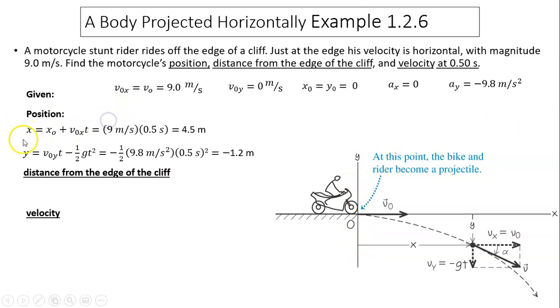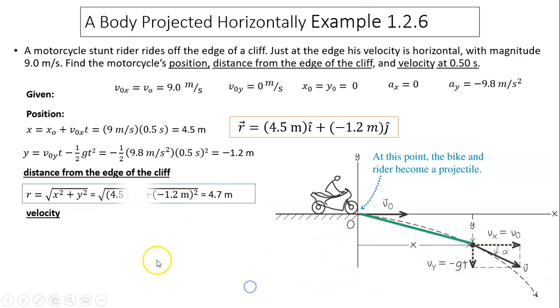To find position, we use position equation. And the vector for the position would be 4.5 meters i plus negative 1.2 meters j. The distance is from origin to here. That's a straight line. We use Pythagorean theorem to find the distance.